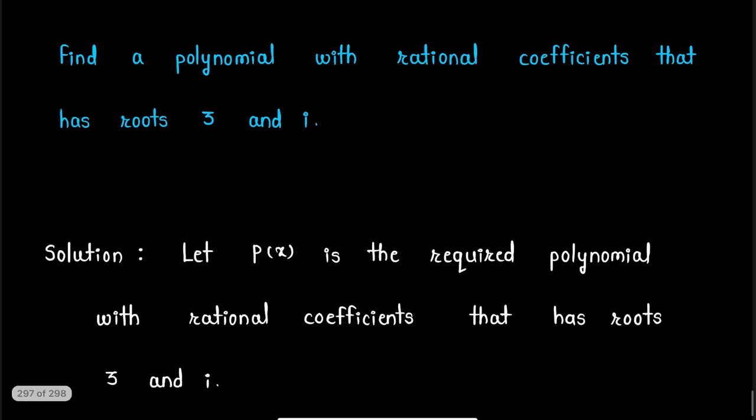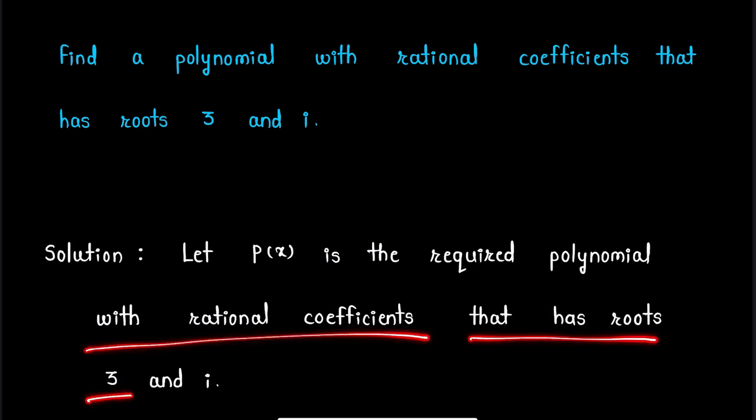We will start our solution. Let P(x) be the required polynomial with rational coefficients that has roots 3 and iota.